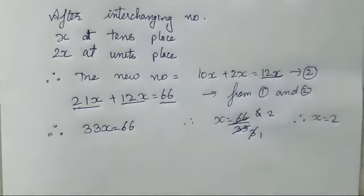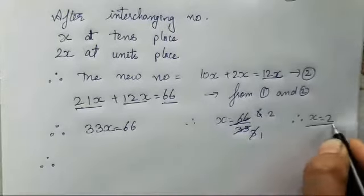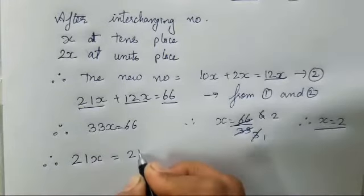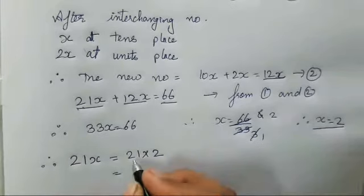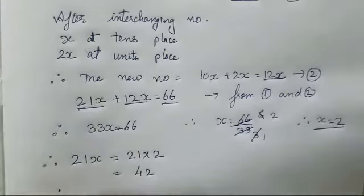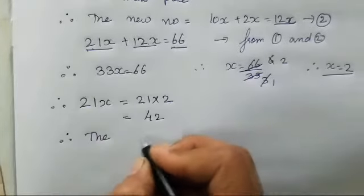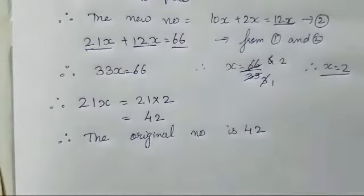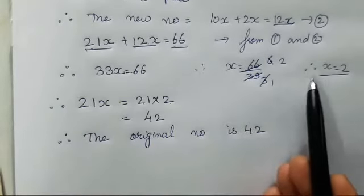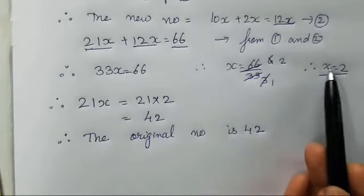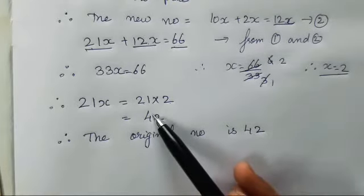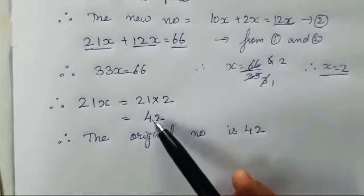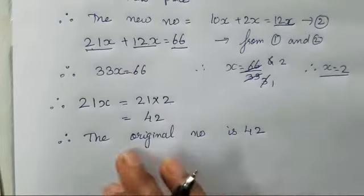Now we got x and we have to find the original number. So x we got means unit place we got. Now we need tens place. So it is going to be 21 into 2, which is 42. Therefore the original number is 42. You will see at unit place there is 2, and we supposed x as unit in the first condition. And we needed tens place, which we got, that is the number 4. So unit 2 and tens 4 are the two digit numbers. This is the original number.